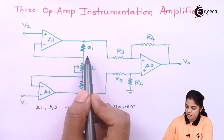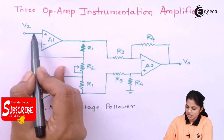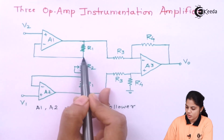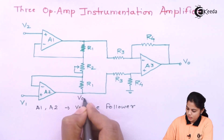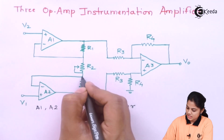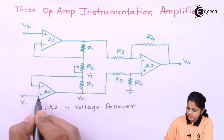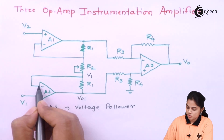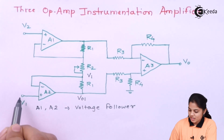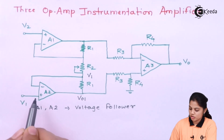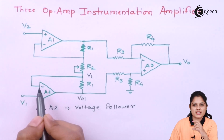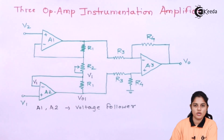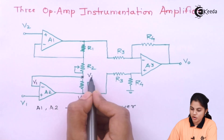The negative terminal is connected directly to the output port, meaning it has unity gain — it is the voltage follower. Whatever voltage is at the positive terminal, the same voltage is present at the inverting terminal. By the virtual short and virtual ground concept, the inverting terminal will also remain at the same potential as V1. So at the inverting terminal we also have voltage equal to V1, and I have named this point as V1.